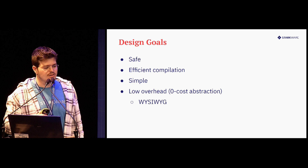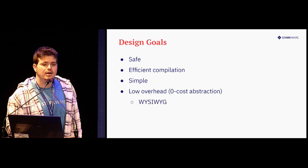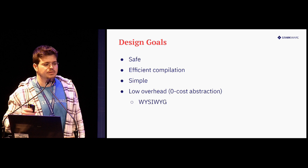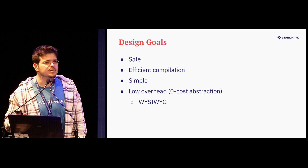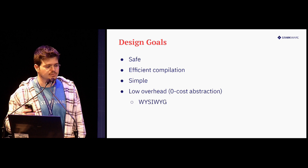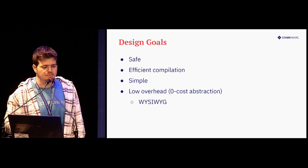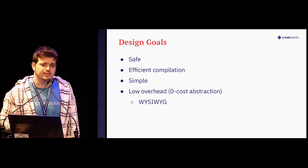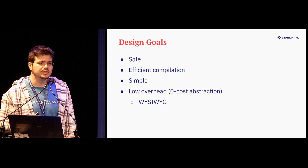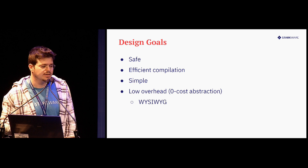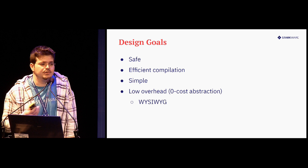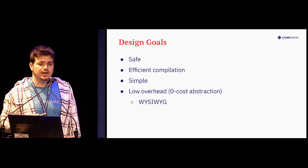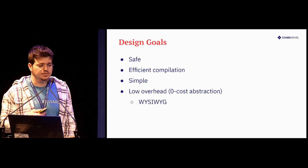So the design goals of Sierra are: to be safe; to have efficient compilation from Sierra to Casm, because this might be done by the operating system itself and might be expensive; to be simple; and to have low overhead, because we don't want our generated Casm to have runtime overhead. Cairo is supposed to be fast and scalable, and we want to keep it that way.